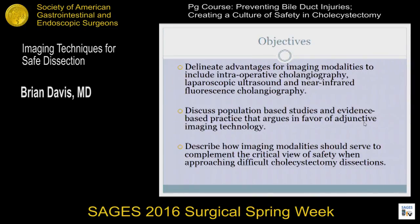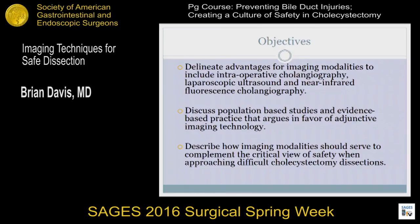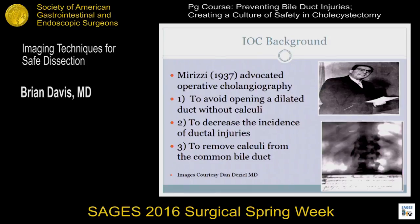My objectives are to talk about the imaging modalities for target identification, discuss the population-based studies that should hopefully convince you why you should be using these adjunctive modalities in achieving the critical view of safety, and how they serve to approach very difficult cholecystectomy dissections where it will be difficult to achieve that critical view.